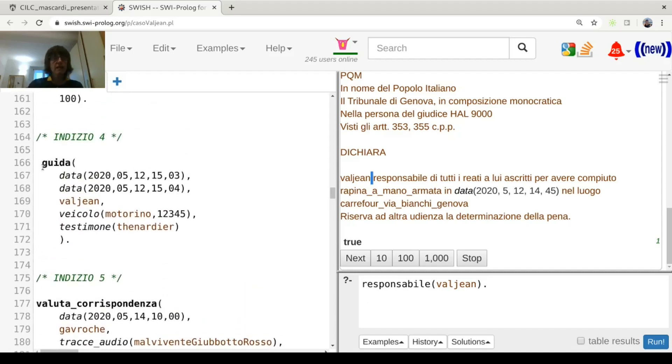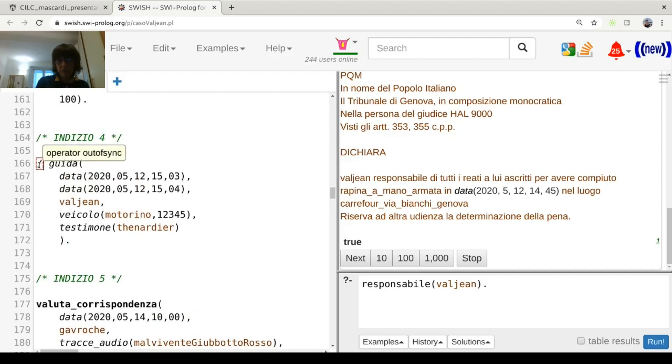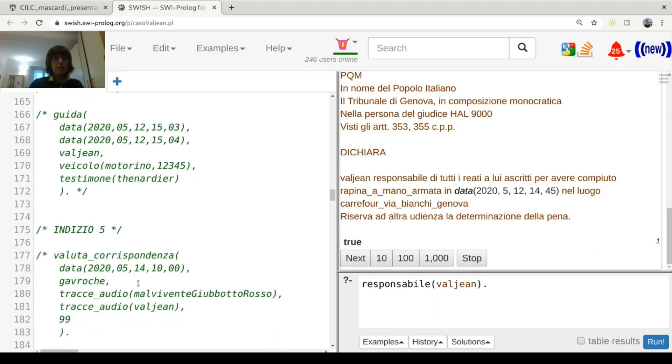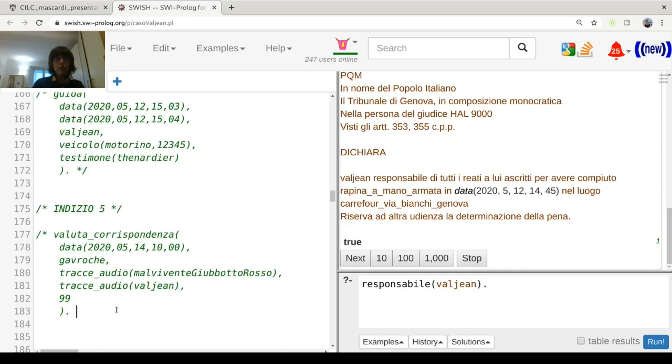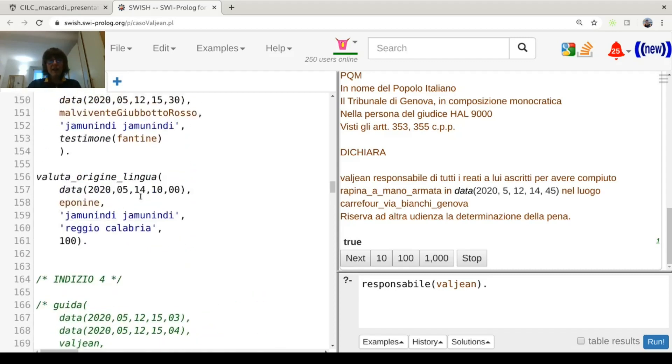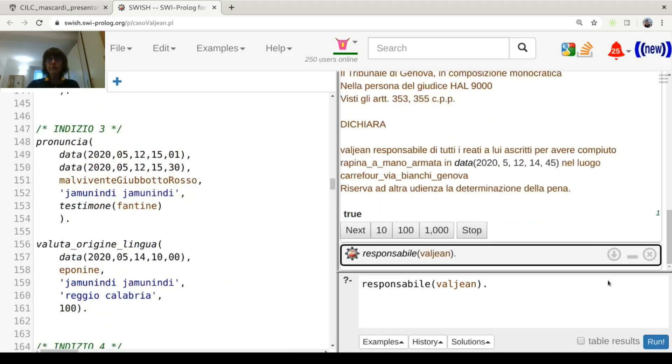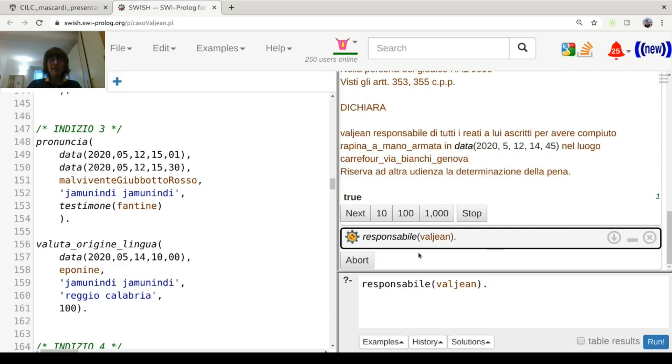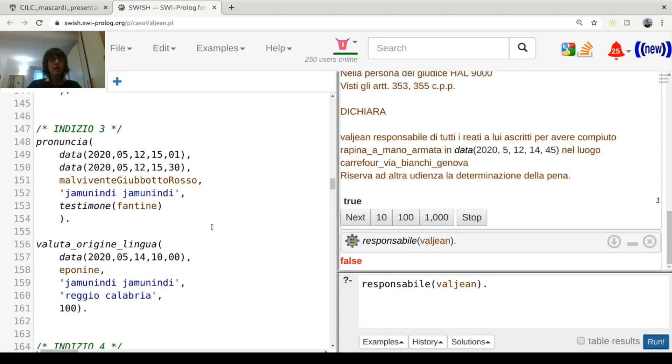In this case, Valjean is considered to be the responsible of the armed robbery. But only because we added a few evidences, evidence 4 and 5, that were not present in the real case. The real case was mainly based on the fact that one fingerprint was found in a stolen moped that was used by the criminals, and that that fingerprint belonged to Valjean, and also that the criminal said that yamu ndi yamu ndi.